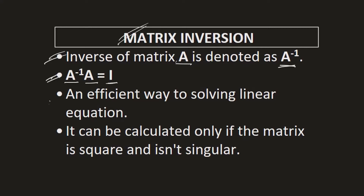Calculating the inverse of a matrix is an efficient way of solving linear equations, and we will see how it increases efficiency in solving for unknowns. The inverse can be calculated only if the matrix is a square matrix — meaning the number of rows equals the number of columns — and it must not be singular.